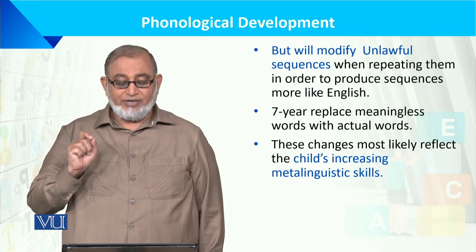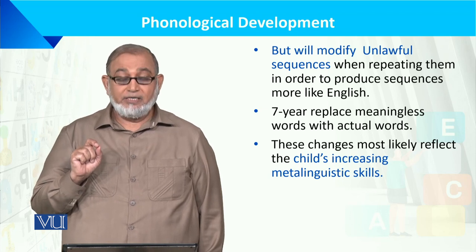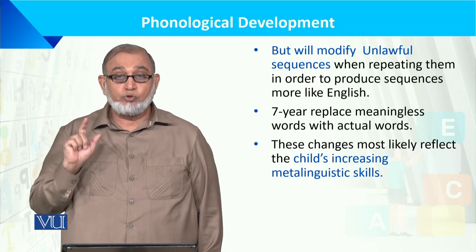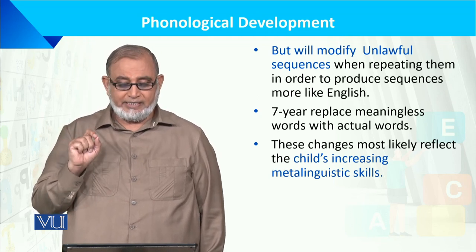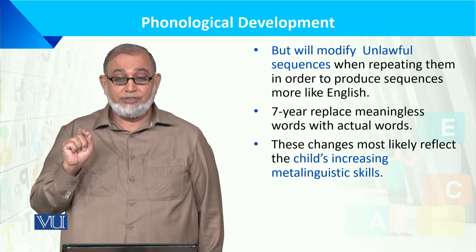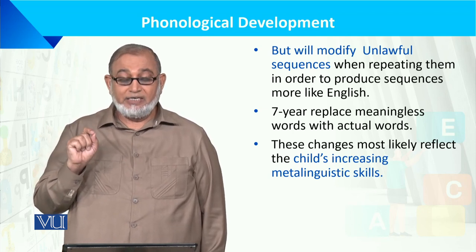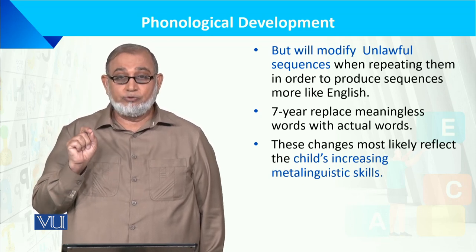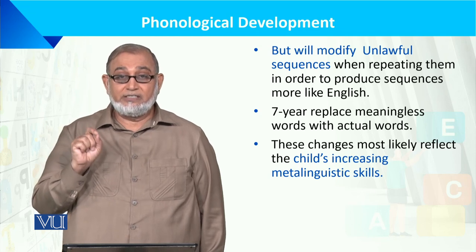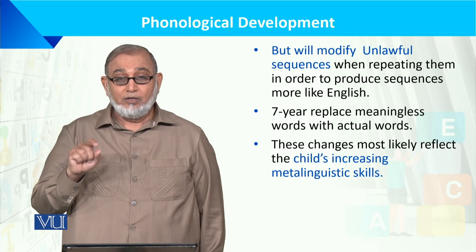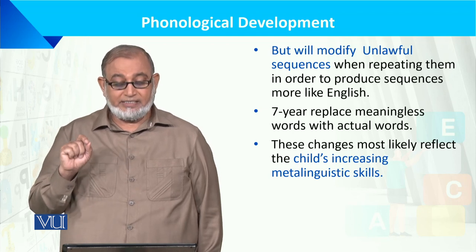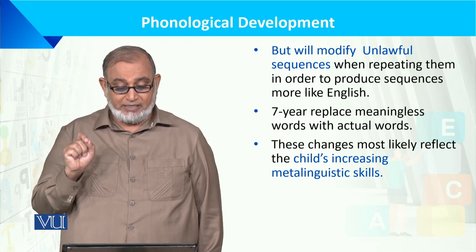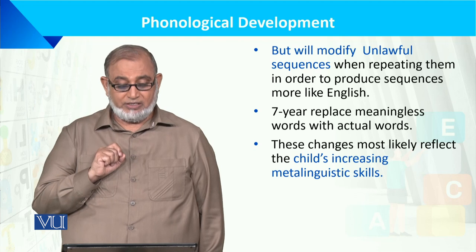بچے unlawful sequences کو بدل سکتے ہیں جب وہ انہیں repeat کرتے ہیں، in order to produce sequences more like English. وہ words کے syntactic rules اور words کی ترتیب کو sentence میں بہتر کر سکتے ہیں۔ 7 سال کی عمر میں وہ meaningless words کو actual words سے replace کر لیتے ہیں۔